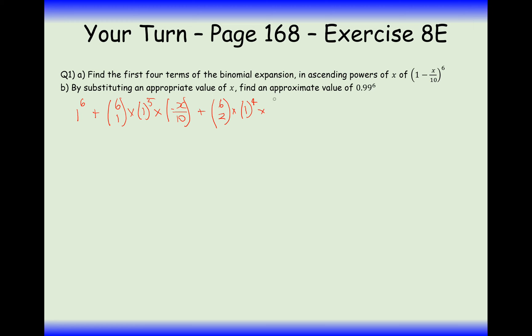And we decrease the power on the 1, and we increase the power on the second term. So now it's at squared. And the fourth term here is going to be 6 choose 3, times... Decrease the power on the 1, increase the power on the minus x over 10. And we're nearly there. We just need to now simplify our answer.